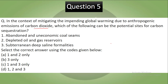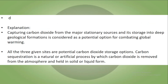Now let's see the answer. Your correct answer is D, which is 1, 2, and 3 — all three. The explanation is that capturing carbon dioxide from major stationary sources and storing it in deep geological formations is considered a potential option for combating global warming. All three given sites are potential CO2 storage options. Carbon sequestration is a natural or artificial process by which CO2 is removed from the atmosphere and held in solid or liquid form.